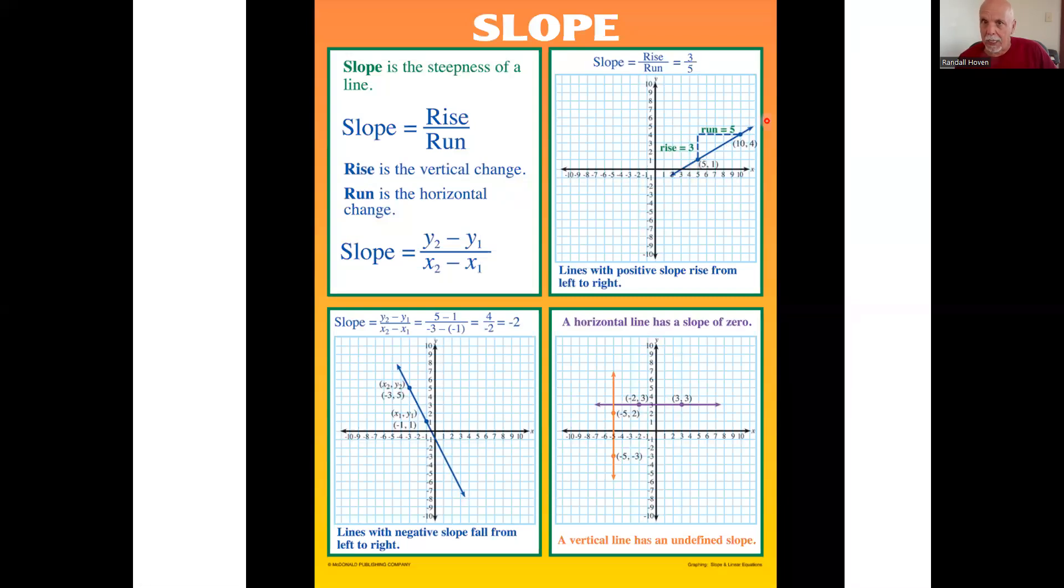We have a straight line, the slope is the rise over the run. Look at this little line here, pick these two points. The rise is the rise of three, and the run is from five to ten, that's five. Rise over the run is three-fifths.